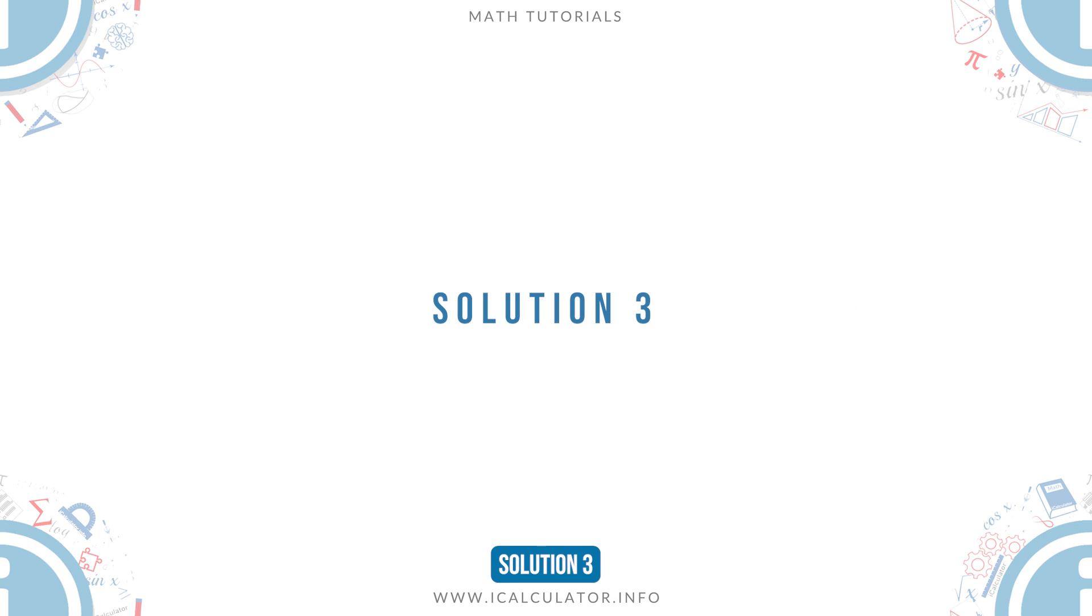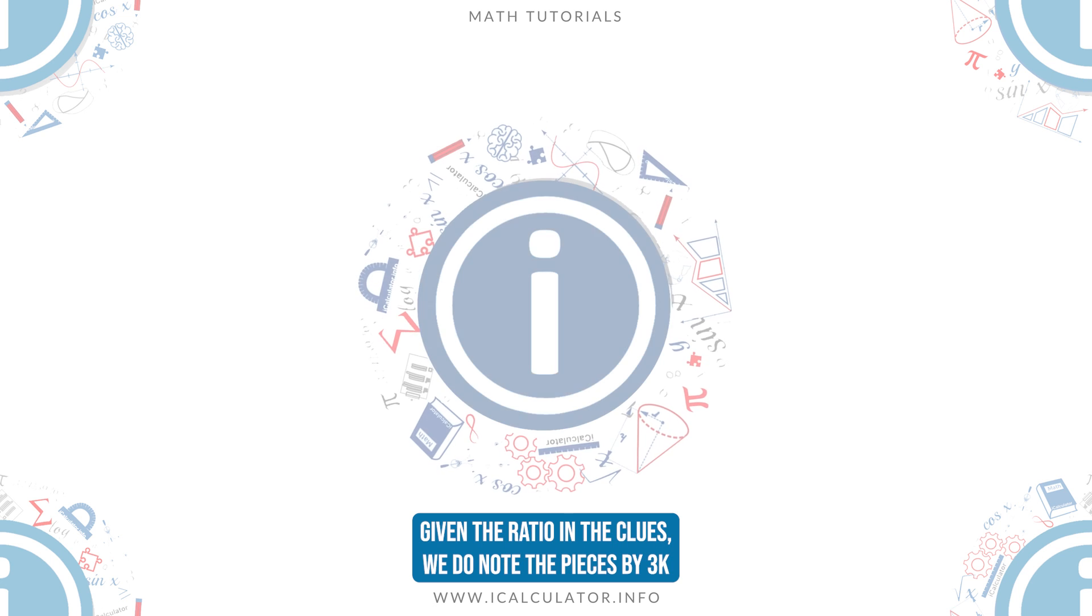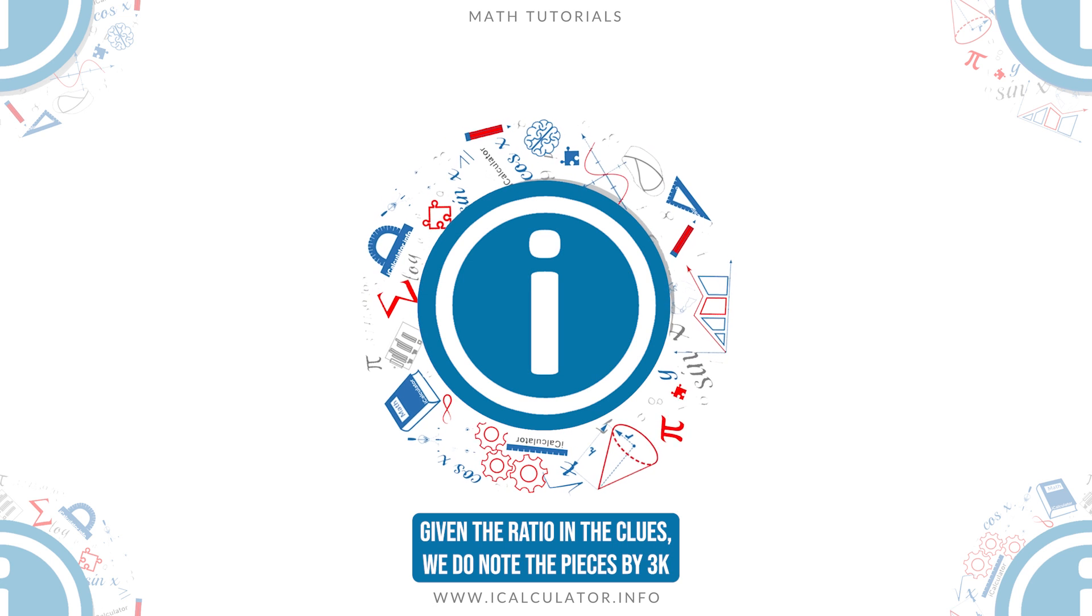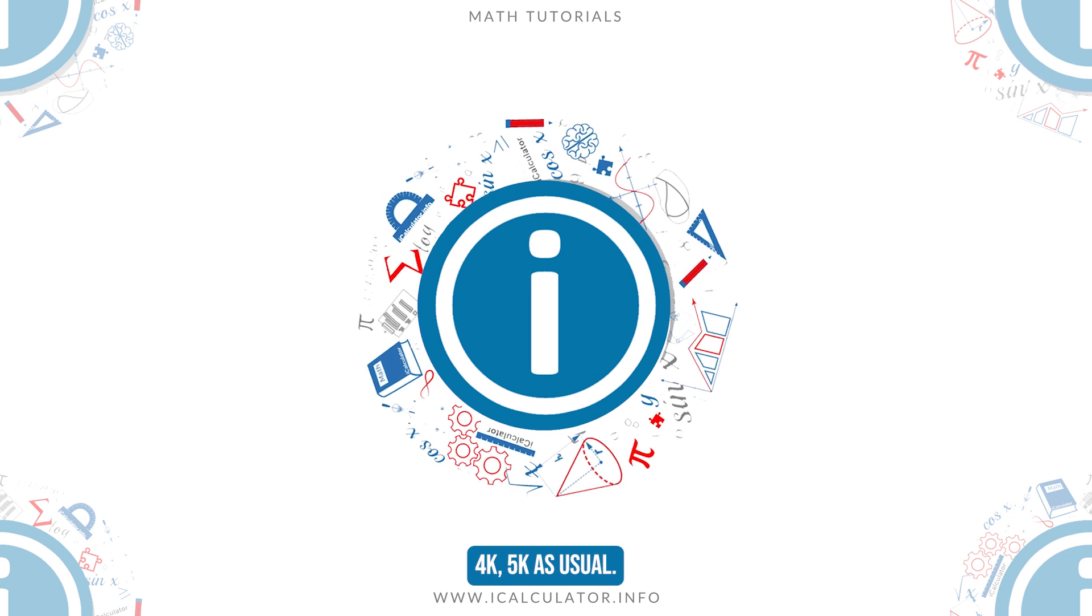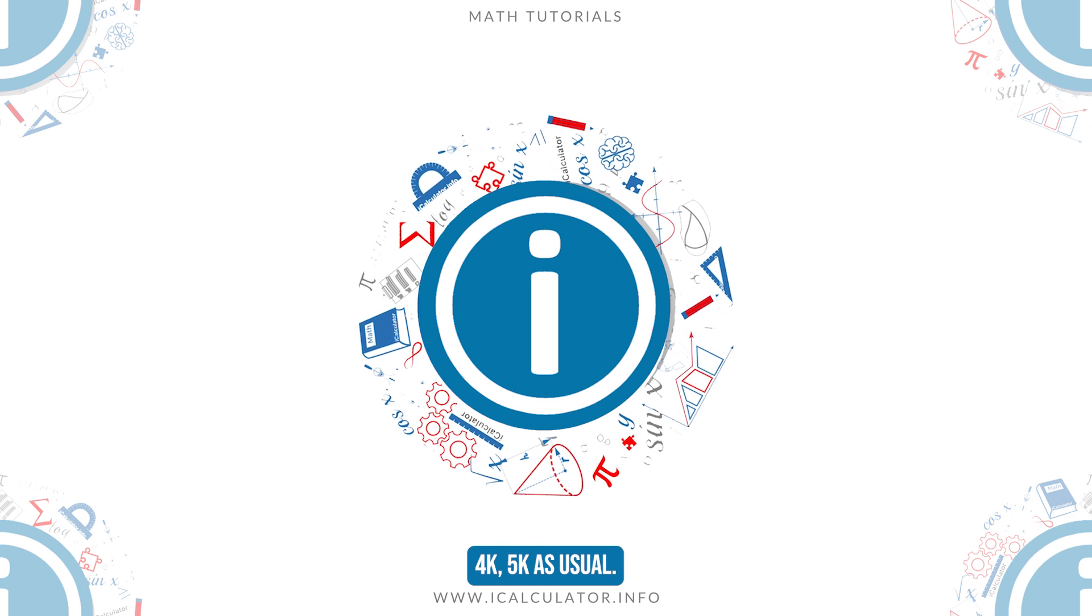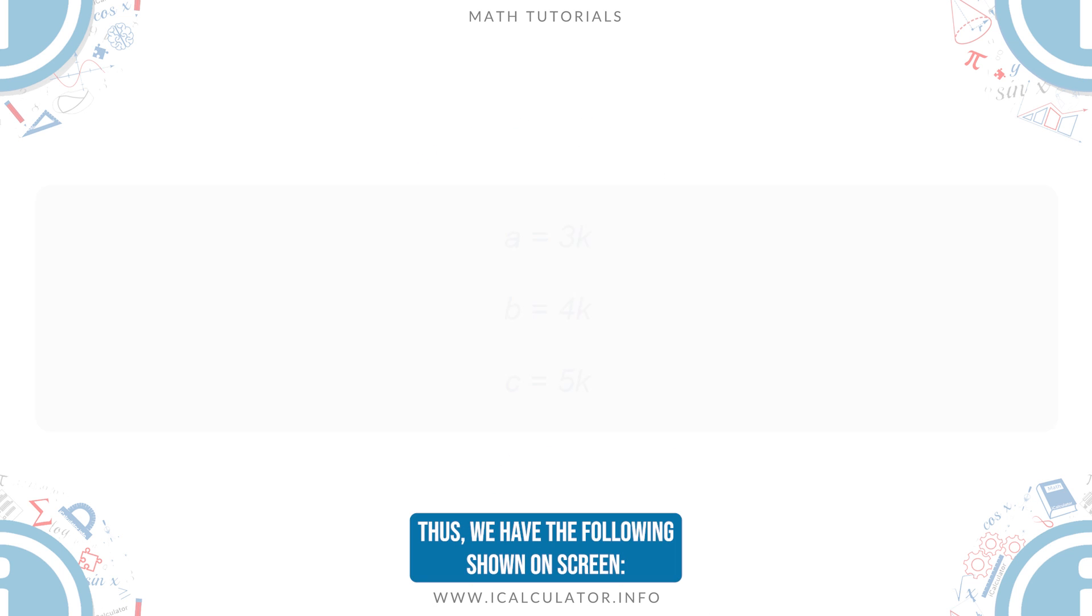Solution 3. Given the ratio in the clues, we denote the pieces by 3K, 4K, and 5K as usual. Thus, we have the following shown on screen.